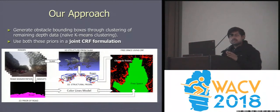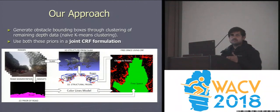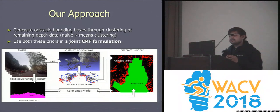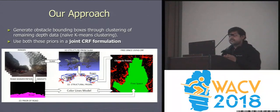Using this, we generate higher-level information. We have a higher-level representation for roads and obstacles and use this in a CRF formulation for free space modelling. The overall framework is shown in the figure.